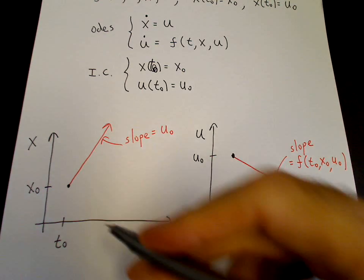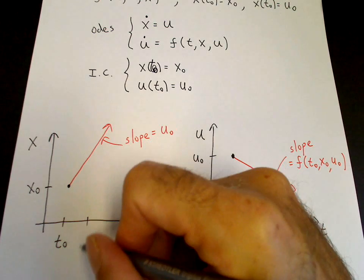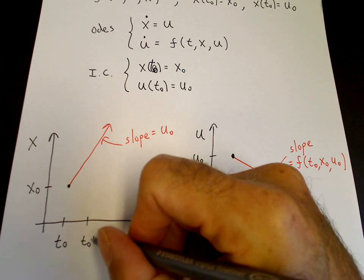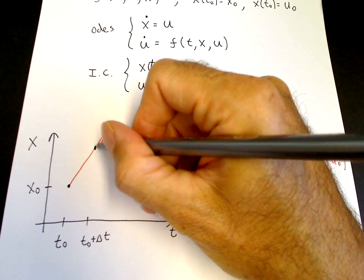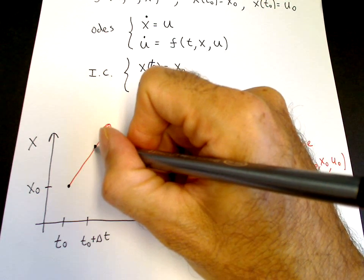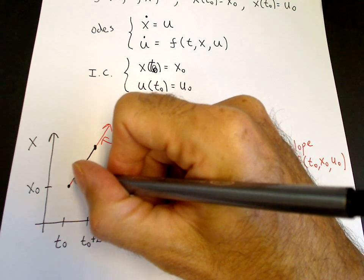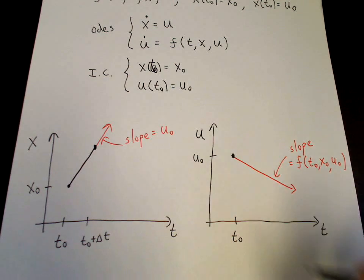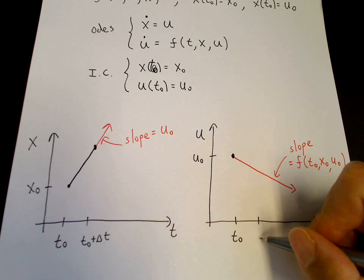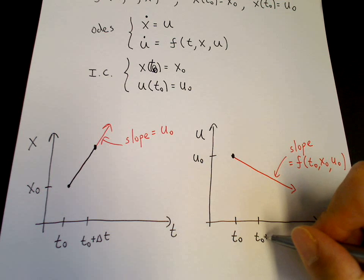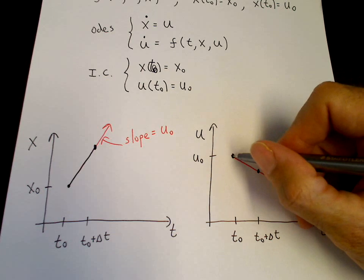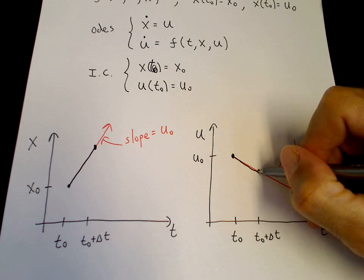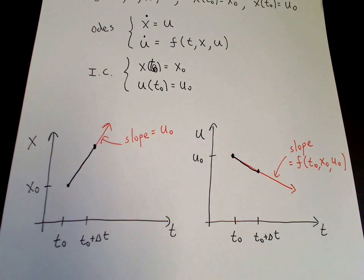And then we march the solution along the tangent line. So this will be our t naught plus delta t. And the solution then comes to here. And this line segment here then becomes our approximation to the solution. We march forward u graph to t naught plus delta t, and then we get to here. And this line segment becomes the approximation to the solution between t naught and t naught plus delta t.